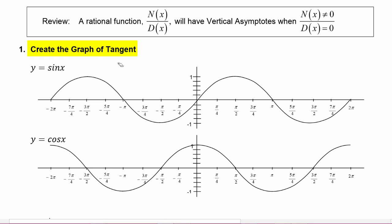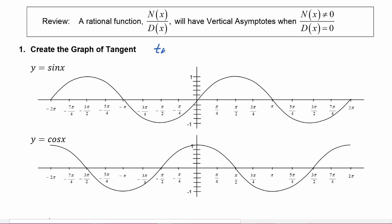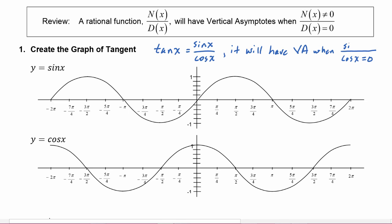Now we want to create the graph of tangent, and we're going to use the graphs of sine and cosine to do that, because we know that tangent of x is equal to sine of x over cosine of x. So it will have vertical asymptotes whenever the denominator, which is cosine, is equal to zero, and the numerator, which is sine, does not equal zero.